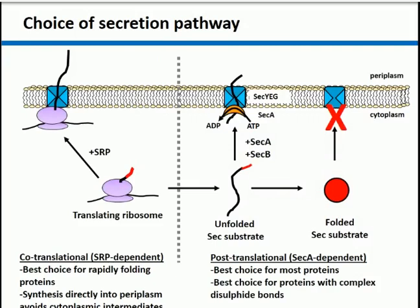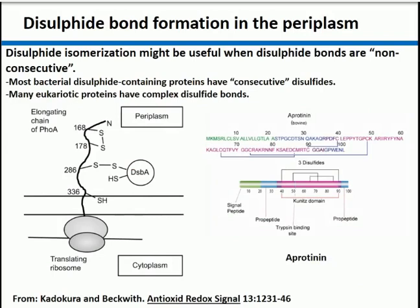If you export proteins by the co-translational SRP pathway, that should allow the protein to export and then go through a preliminary folding step that might allow more native folding before disulfide bond formation. It's a bit of hand-waving, but what it tells you is that you might want to try more than one approach. If you're having problems producing your protein in the periplasm and really need to put it there, you might want to try different export signal sequences to get it out there, because it could affect the folding of the protein.